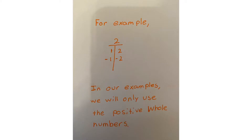For example, two factors into a positive one and a positive two. It also factors into a negative one and a negative two, because negative one times negative two gives you a positive two. However, in our examples, we will only use the positive whole numbers.